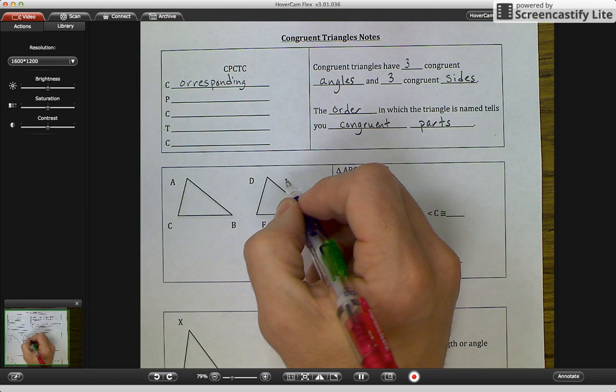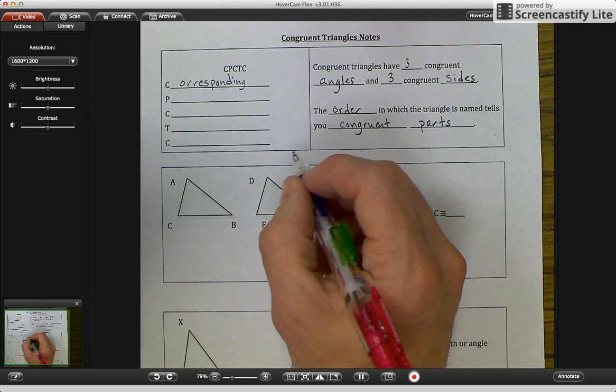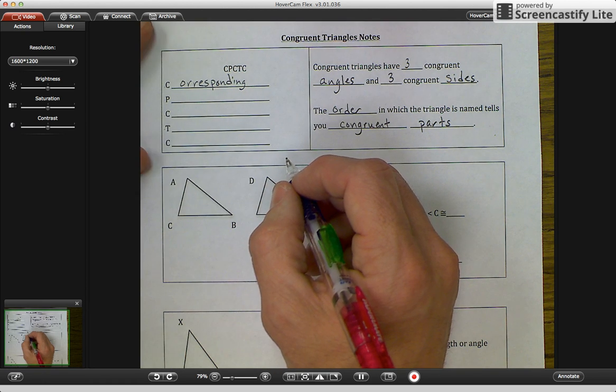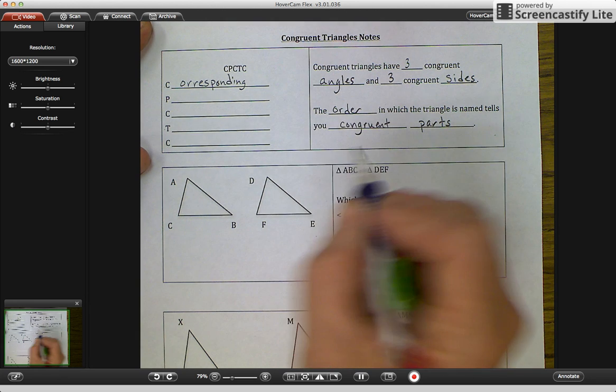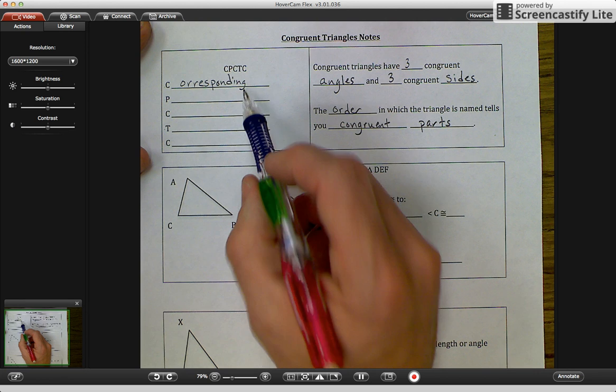And if you remember from our parallel lines and transversals, the corresponding angles were in the same location on a different parallel line. So with triangles, it's going to be the same thing. Corresponding would be the same angle on the other triangle.